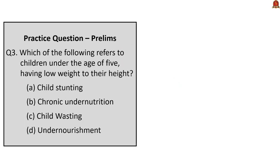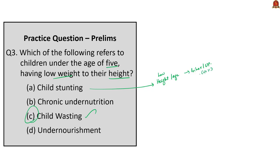Moving on to the third question: which of the following refers to children under the age of 5 having low weight relative to their height? The four options are child stunting, chronic undernutrition, child wasting, and undernourishment. The given statement is the definition of child wasting. Child stunting means children having low height for their corresponding age, reflecting chronic malnutrition. Acute malnutrition is reflected by child wasting, and undernourishment refers to having less calorie intake. So the correct answer is option C, child wasting.